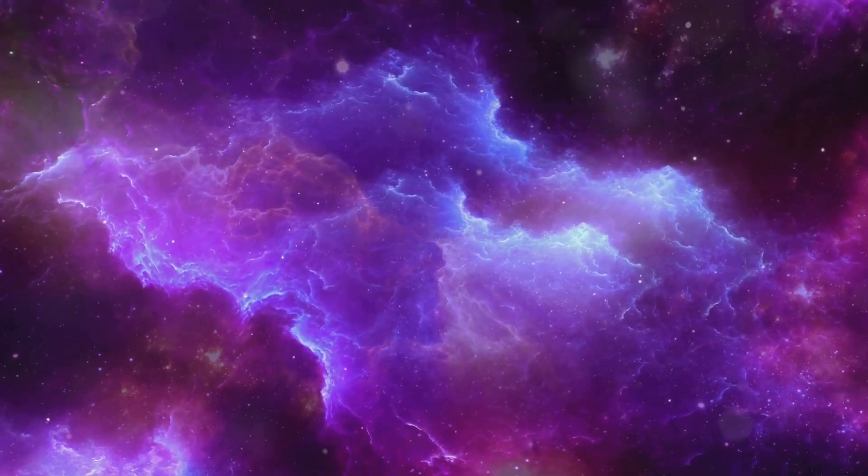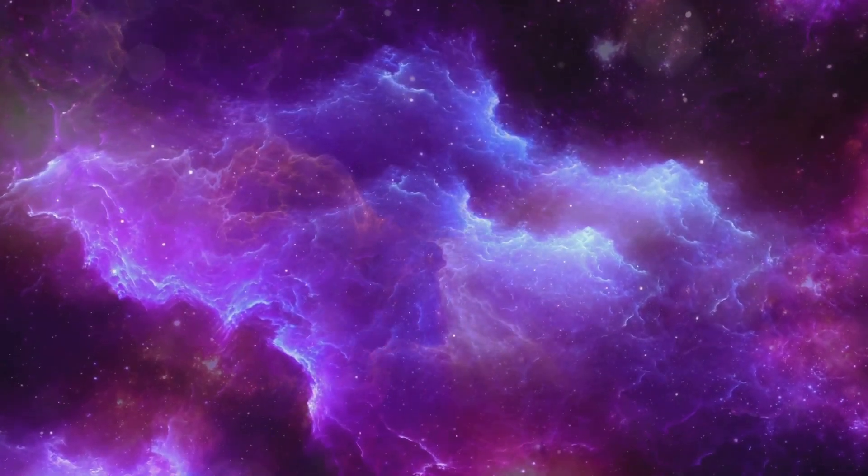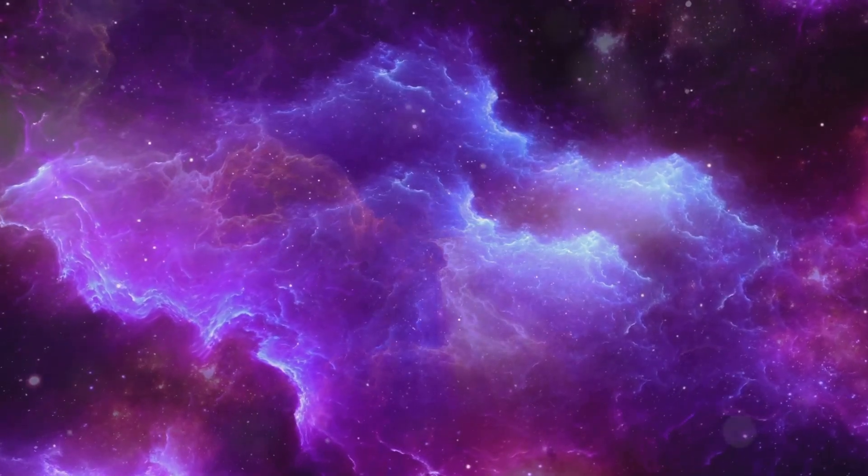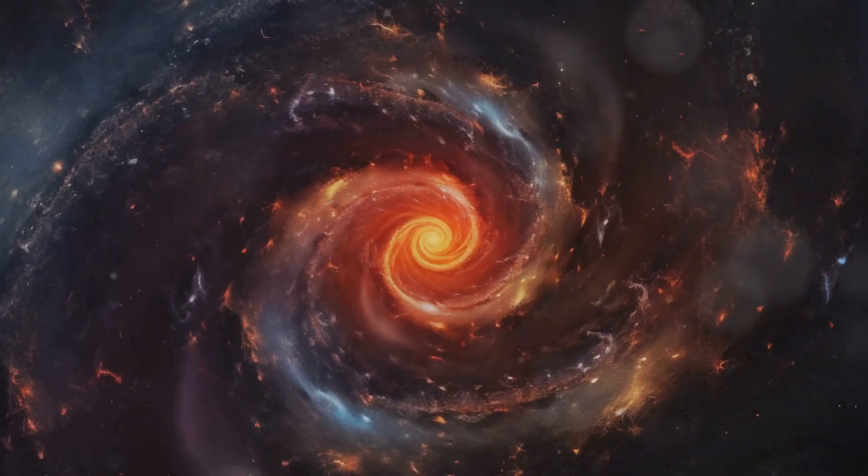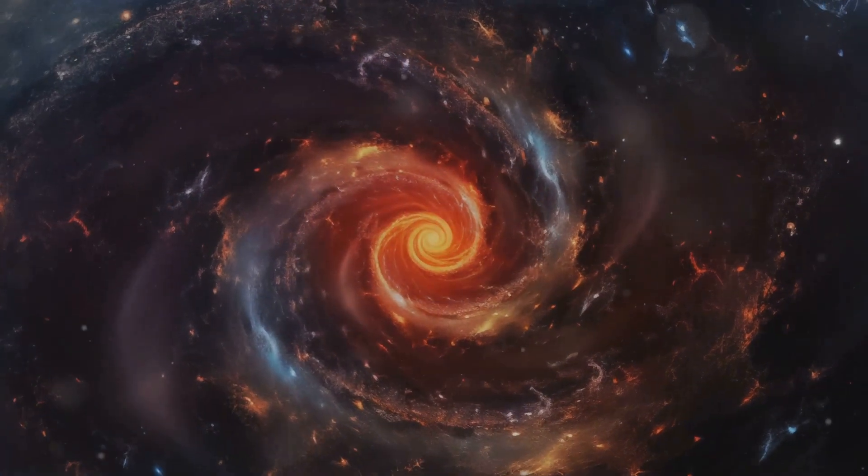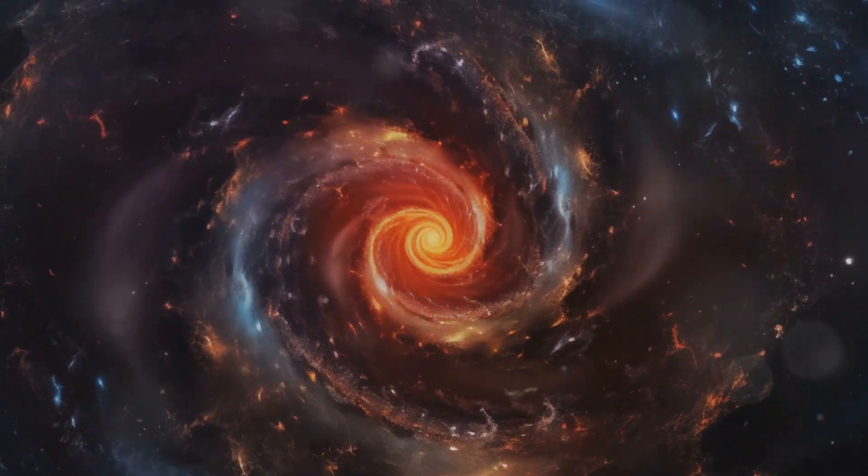This disk, known as a proto-planetary disk, was composed of the same gas and dust that made up the original nebula, but now it was spinning around the newborn star like a giant cosmic carousel.